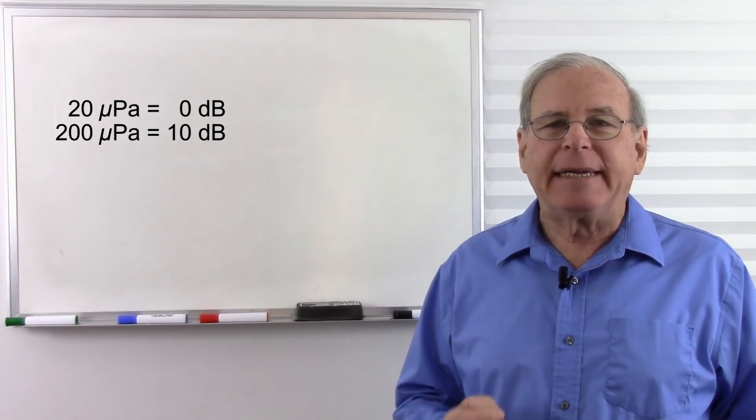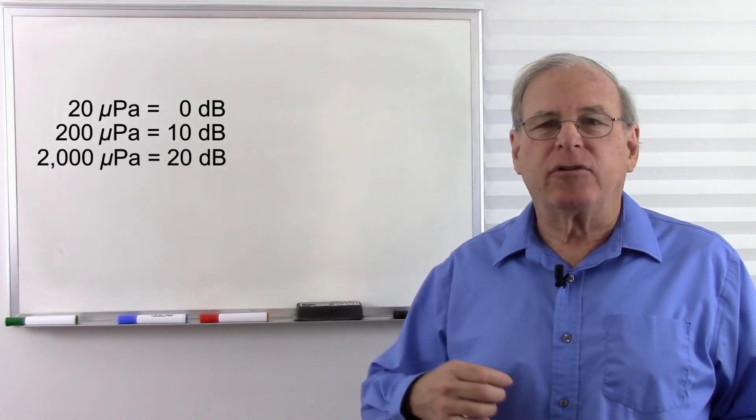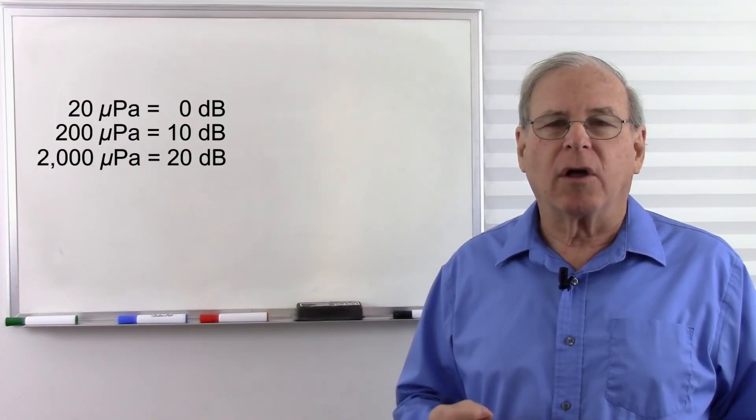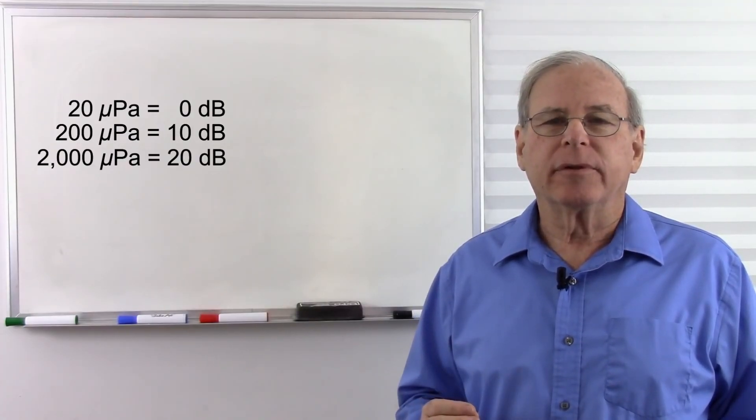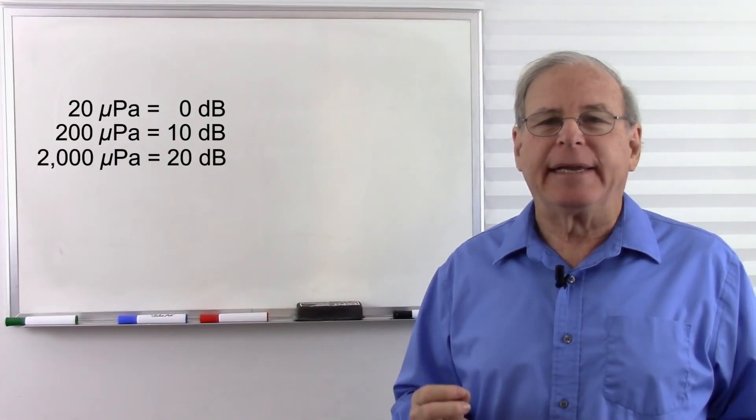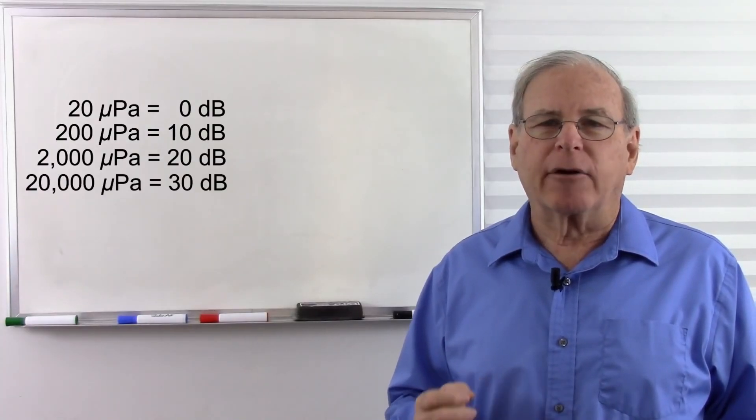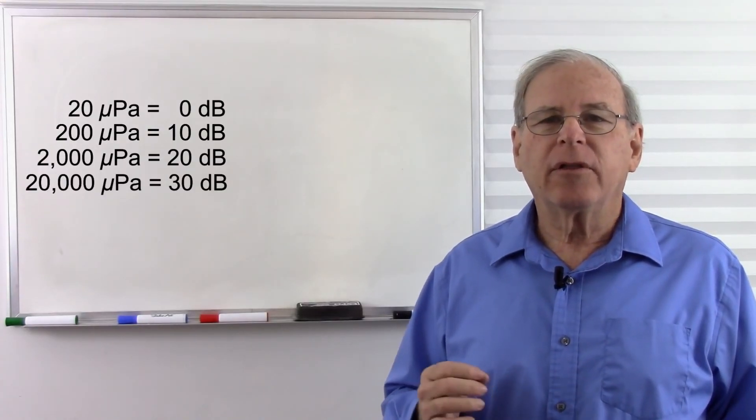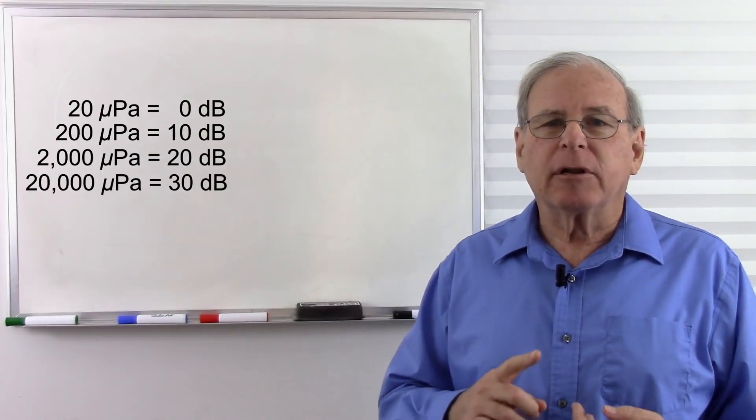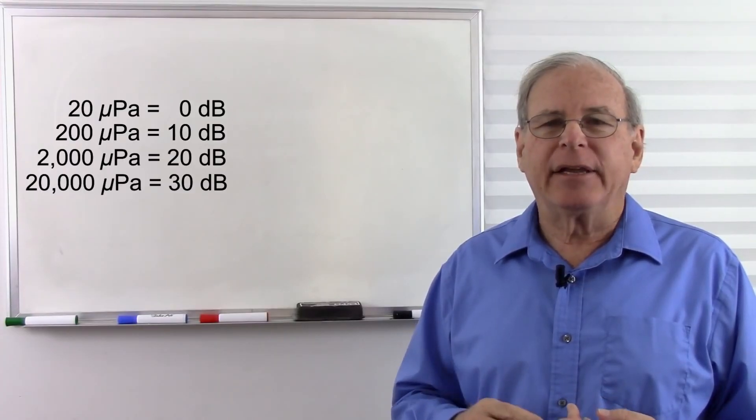Now let's multiply that by 10. Instead of calling it 2000 micropascals, we call it 20 decibels. Now let's multiply that by 10 again, and instead of calling it 20,000 micropascals, we call it 30 decibels. So we multiply by 10, we simply add 10 decibels.